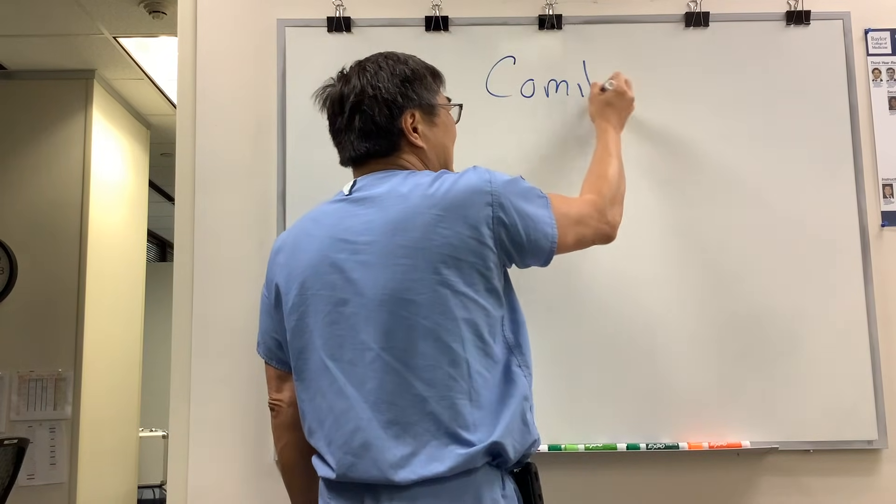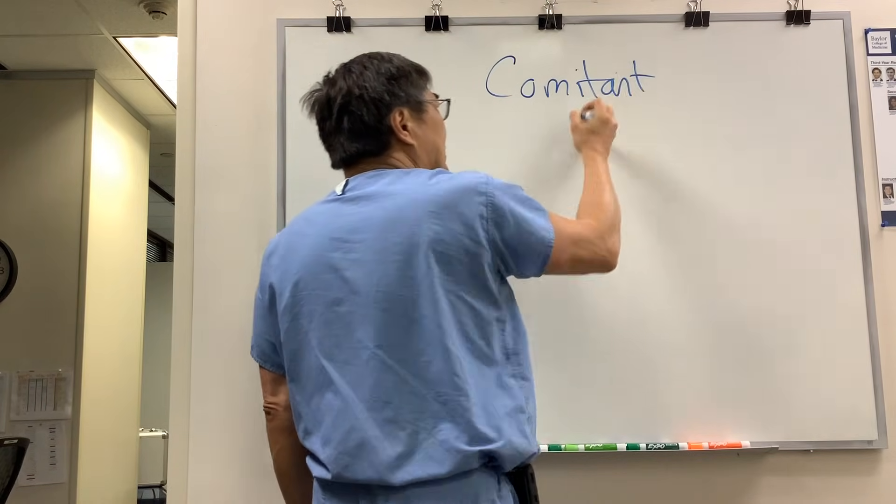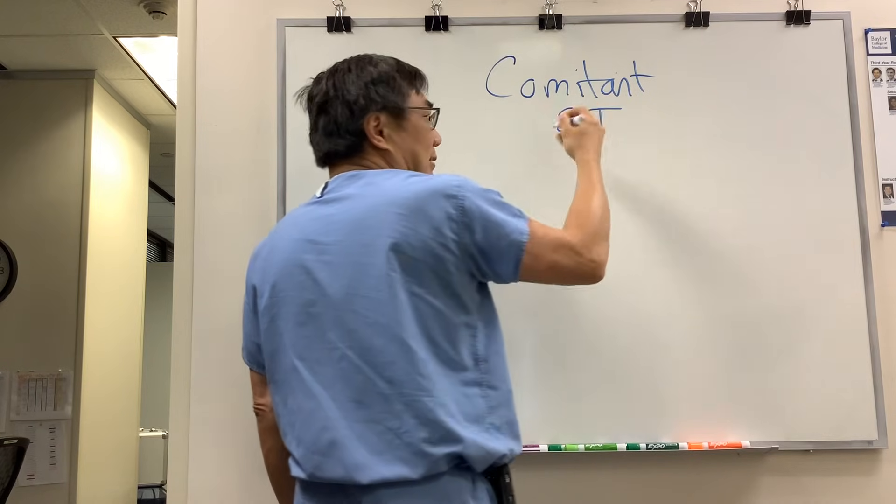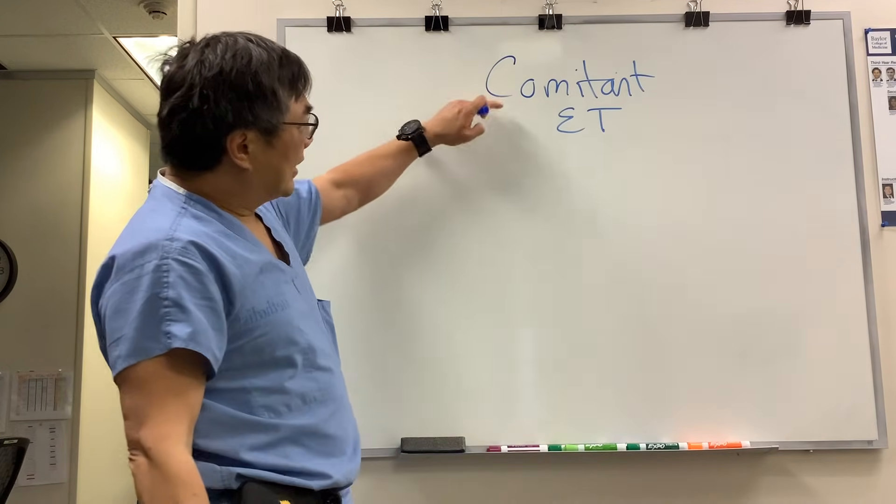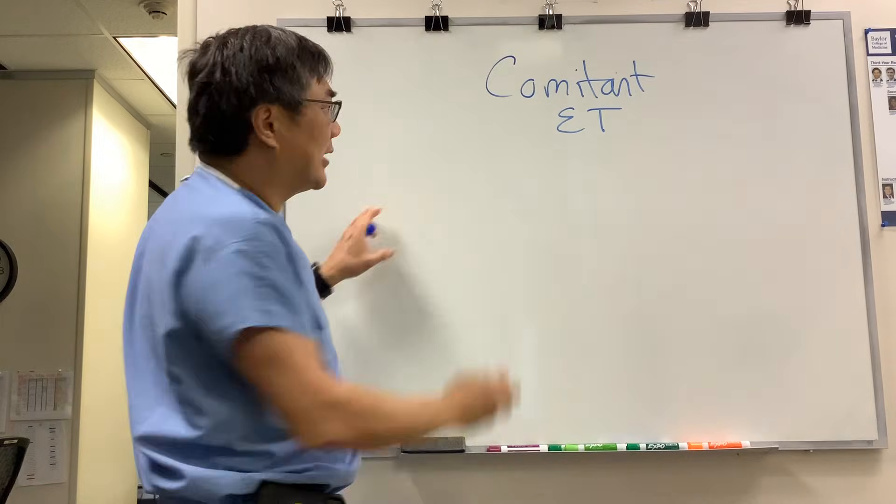We're going to be talking about comitant strabismus, and in this case, esotropia, but it doesn't have to be esotropia. The key finding is whether it's comitant or not.